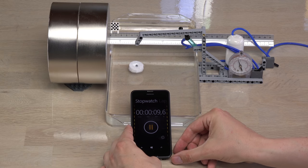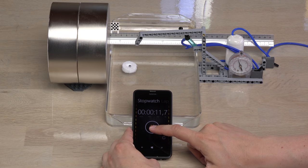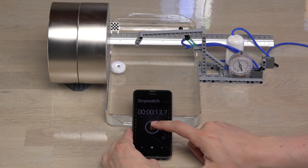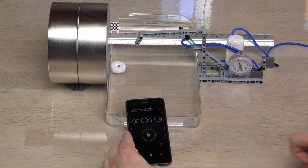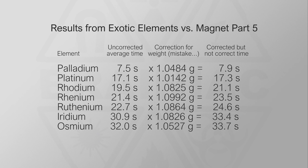But hey, I hope you are here to see original videos and experiments. The setup is not good enough to find an exact value for magnetic susceptibility, but it sure does work well enough to find the right order as shown in Exotic Elements vs. Magnet Part 5. But I was wrong about the way I corrected for weight in the video.